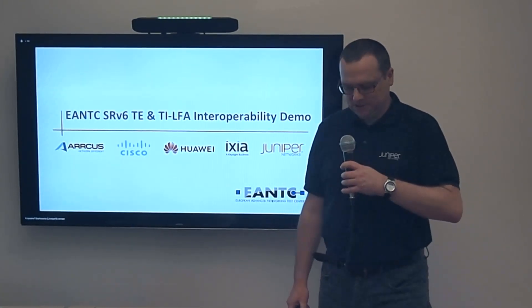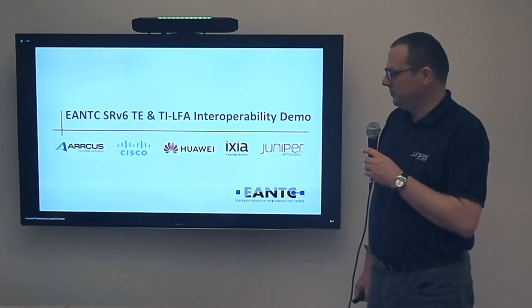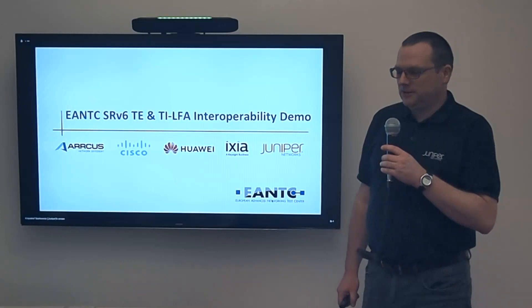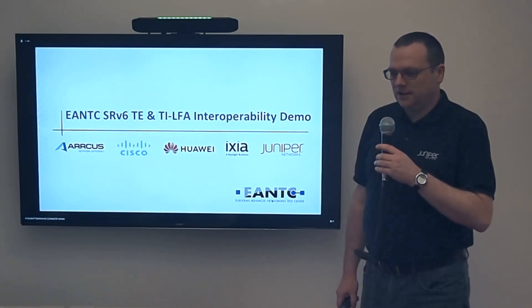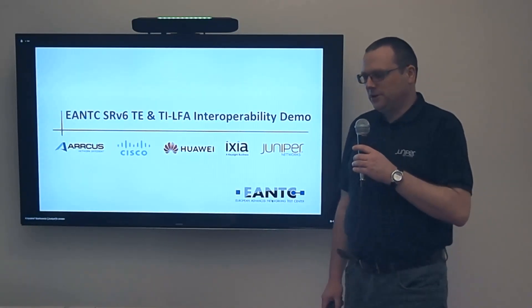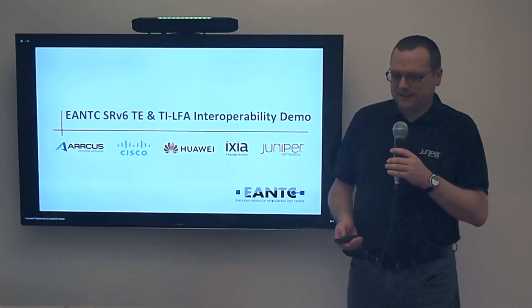Hi, my name is Krzysztof Szarkowicz from Juniper Networks. I would like to present a report from the interoperability testing for SRv6. We have tested a couple of things and a couple of companies were included here, like Arcus, Cisco, Huawei, Ixia and Juniper. All these companies were included in different roles in the tests. The purpose of the test is to verify layer 3 VPN operation over SRv6. We have tested only end and DT4, which means that the layer 3 VPN v4 was tested between a couple of vendors. Then we have tested segment routing traffic engineering using SRv6 architecture, and here we use the end.insert function and PSP, Penultimate Segment Popping function.